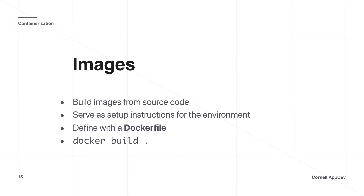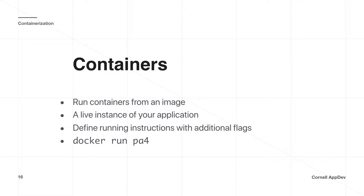Images are built from source code and serve as setup instructions for how to run your code — analogous to activating a virtual environment and running pip install. This is all defined in what's called a Dockerfile. Once you have a Dockerfile, you run the command `docker build .` — the dot indicates building the current directory — and Docker looks for the Dockerfile there and builds your application image according to those instructions.